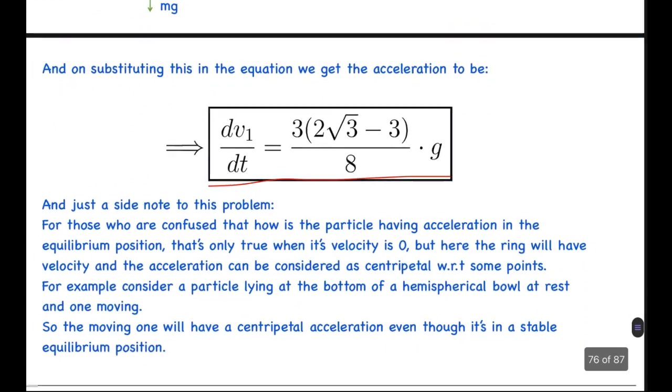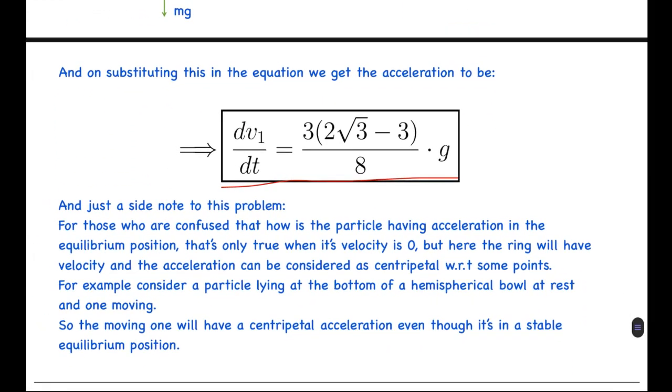Just a side note to this problem: for those who are confused about how the particle is having acceleration in the equilibrium position—it's a common result that the force at the equilibrium position is zero, but that's only true when its velocity is zero. But here the ring will have velocity, and the acceleration can be considered as centripetal with respect to some other points. The other method I said earlier is that we can observe with respect to one of the two pegs, and with respect to that it can be considered as centripetal acceleration.